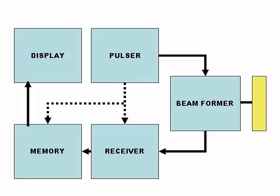This is the machine. It has a pulser that is connected with the button of dip, a beam former that produces the steering and changes the focal areas. The other part is exactly like a computer: it is a receiver, a memory, and a display. This is exactly like a computer.